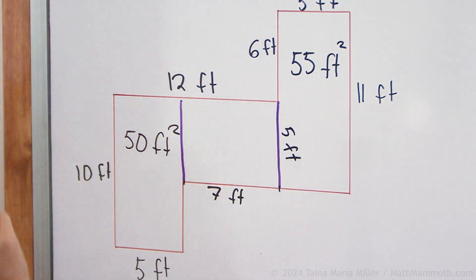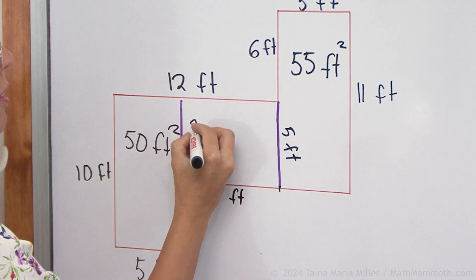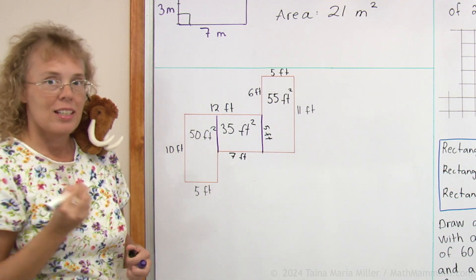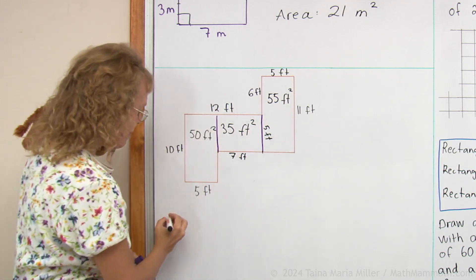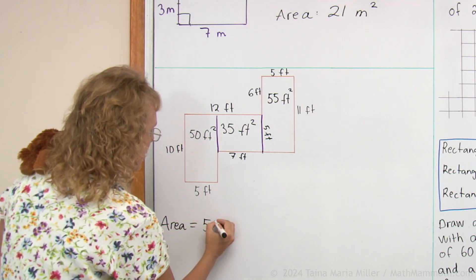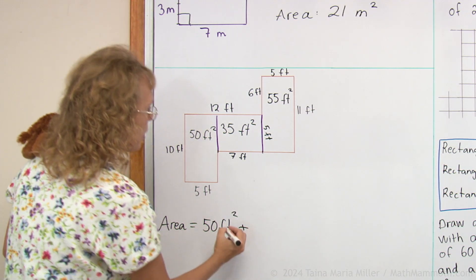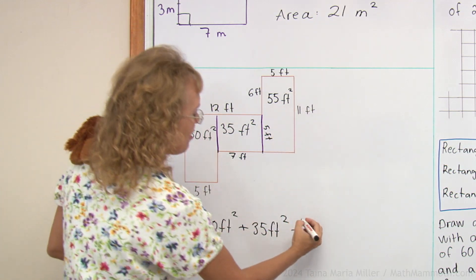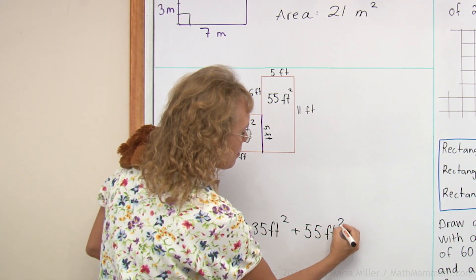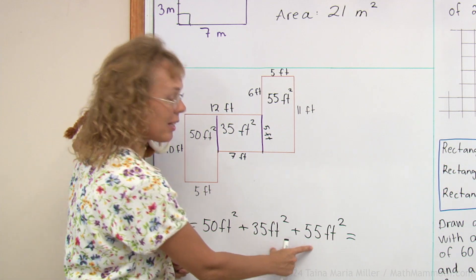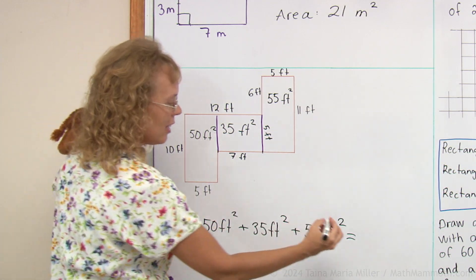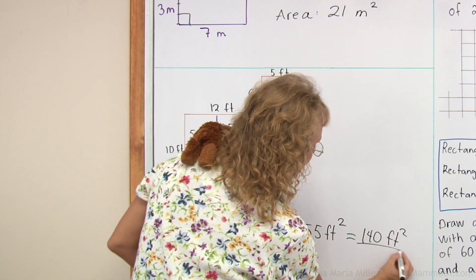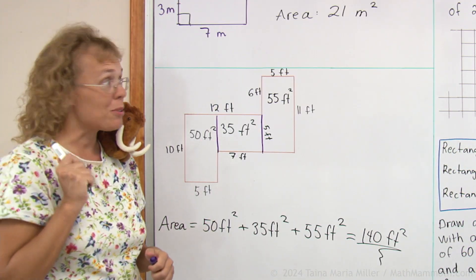And now we can find the total area by adding 50 square feet plus 35 square feet plus 55 square feet. These two make 90 plus 50. So we get 140 square feet.